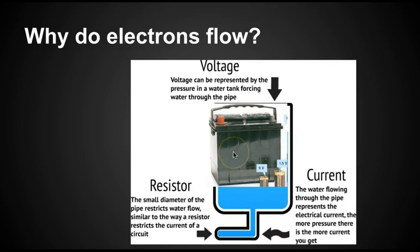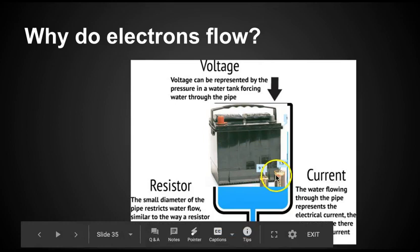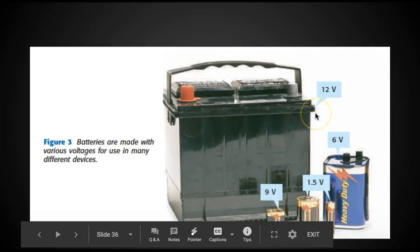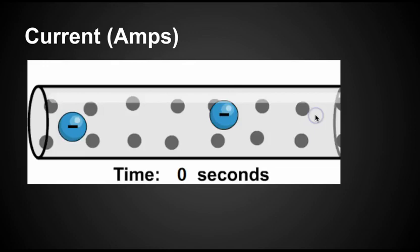So voltage. Again, think of it kind of like pressure. So a 12-volt battery would push those electrons with more pressure than, let's say, a 1.5-volt battery would. So these Vs represent volts, and that's how much pressure you have in that battery.